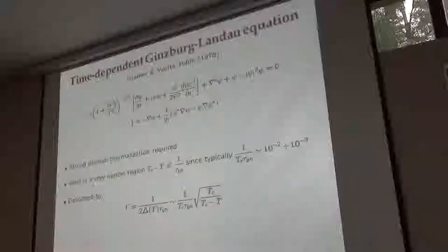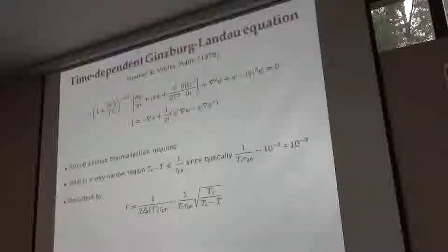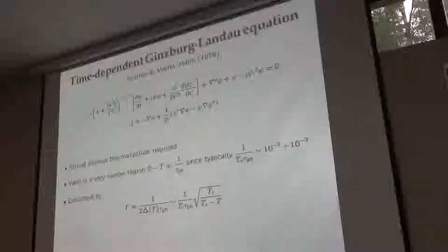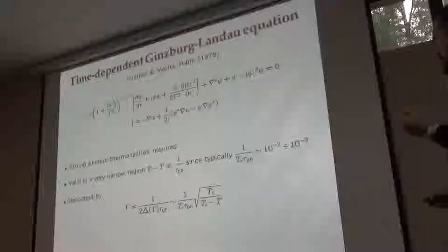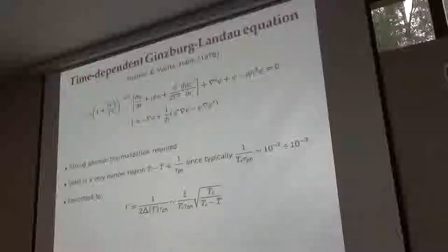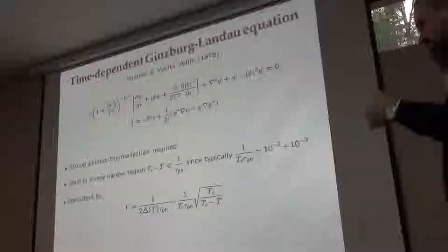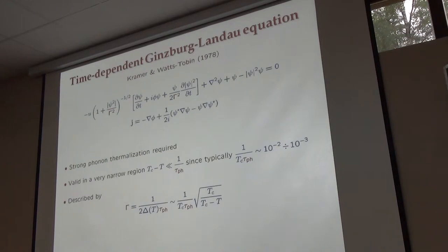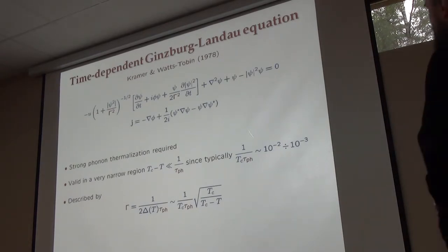Of course the window where this theory can be applied is very small, but gamma can be either small or large — there is some parameter here. It's very good to have such nice equations because the only thing left is just the dynamics of the order parameter field. The presence of inelastic relaxation is important since it means that very close to Tc, the order parameter changes slowly so quasi-particles can relax to the thermal distribution function, and then you can integrate out the particle components and end up only with the superconducting order.